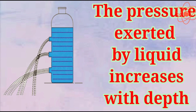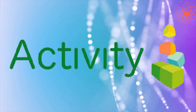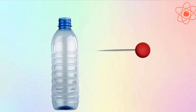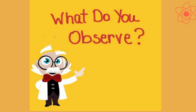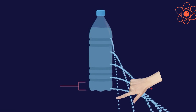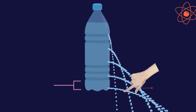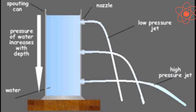Fourth characteristic: the pressure exerted by a liquid increases with depth. Take an empty plastic bottle and make some holes along its side at different heights from the base. Now pour water into the bottle. We can see that the jet coming out from the top hole falls very close to the bottle, whereas the jet coming out from the bottom hole falls far away from the bottle. This shows that liquid pressure increases with increasing depth.